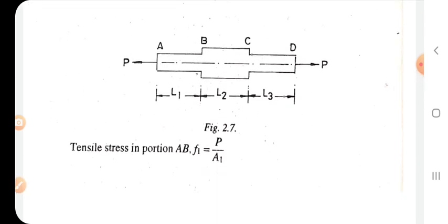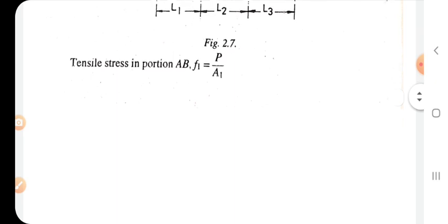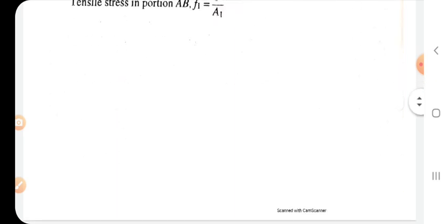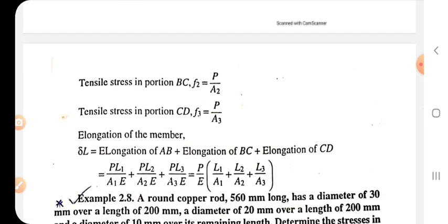Now the formula we know: stress equals force by area. Tensile stress in portion AB, F1 equals force by area. See that two forces acted at different locations, different directions P and P. This is the tensile force. Tensile stress in portion AB: F1 = P/A1. In BC: F2 = P/A2. Tensile stress in portion CD: F3 = P/A3.